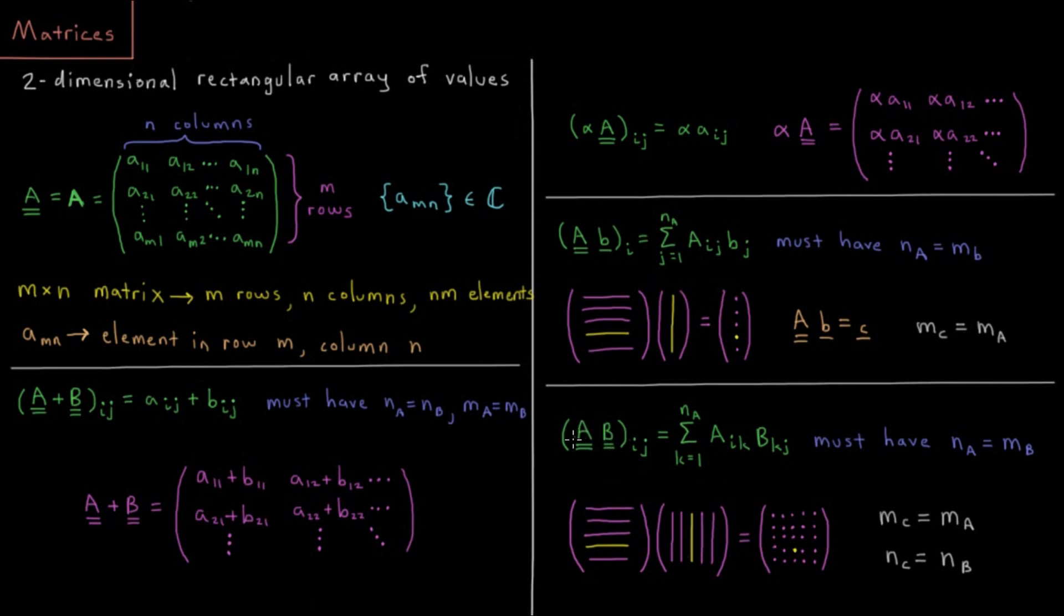The elements in A times B are going to be a sum from k equals 1 to the number of columns in matrix A, and that's going to be A sub i, k, times B sub k, j. Once again, going down the row of A and the column of B, multiplying those values together, and adding them up as we go, giving us a single element in the resulting matrix C.